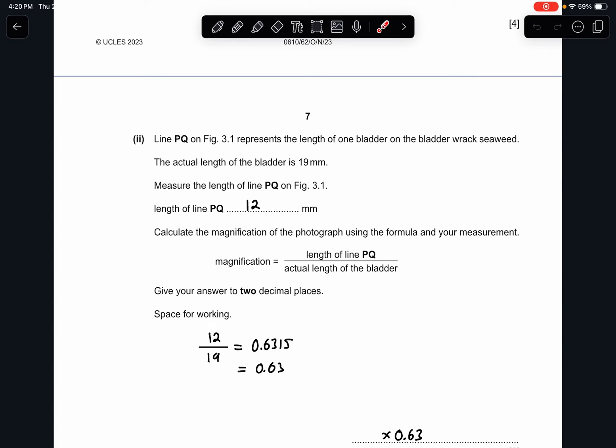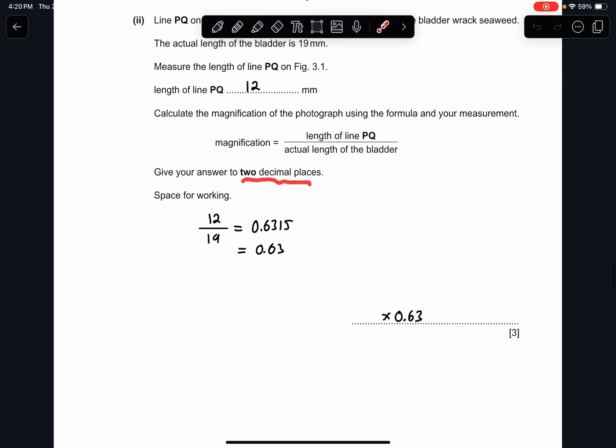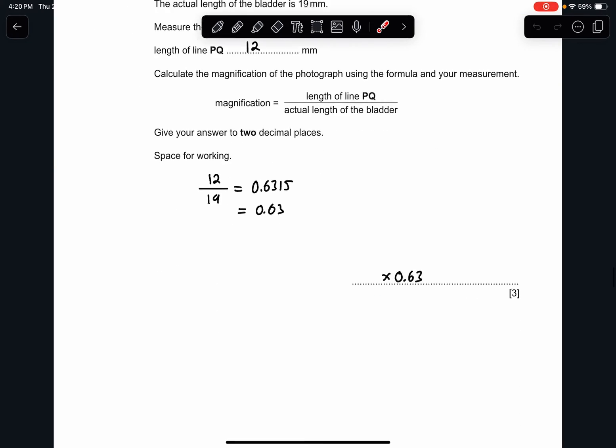For part 2, line PQ on figure 3.1 represents the length of one bladder on the bladder wrack seaweed. The actual length of the bladder is 19 millimeters. I measured the length of the line PQ. It's about 12 millimeters for me. And you just sub in to find the magnification. So I got 0.63. And remember, it's two decimal places. I'll just put an X to indicate this is magnification. And it will be X 0.63.